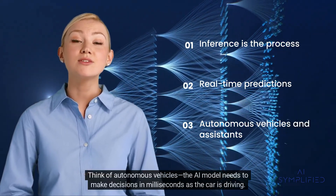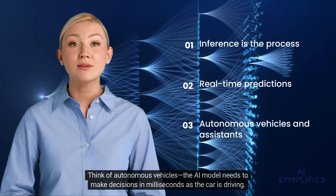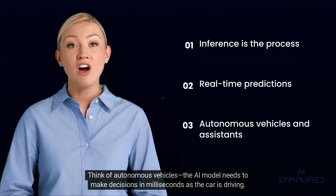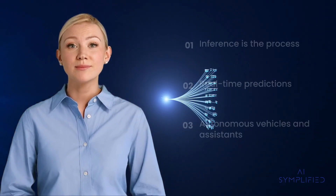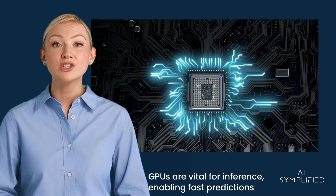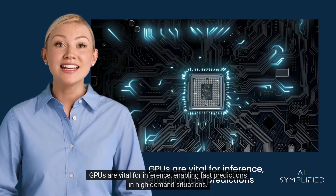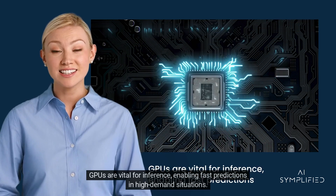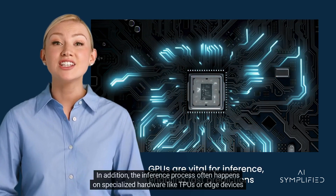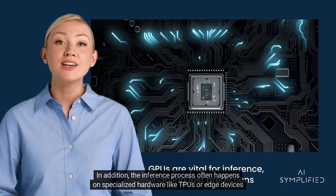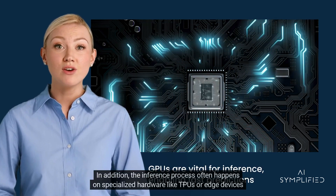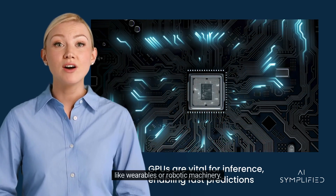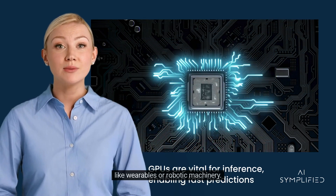Think of autonomous vehicles — the AI model needs to make decisions in milliseconds as the car is driving. GPUs are vital for inference, enabling fast predictions in high-demand situations. In addition, the inference process often happens on specialized hardware like TPUs or edge devices like wearables or robotic machinery.